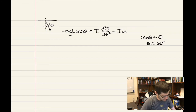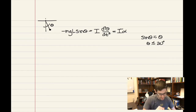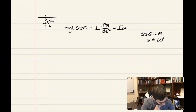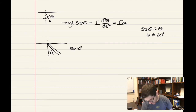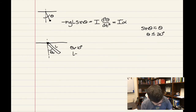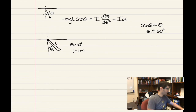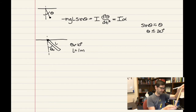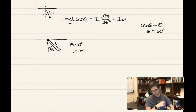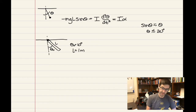Let's do a pendulum problem. Suppose I have a meter stick (length L = 1 meter) suspended from the ceiling, released with a small angle theta₀ = 10 degrees. This is not a point-mass pendulum — it's a physical rod rotating about a pivot point at its end. The question is: what is the period of this meter stick? Let's first show it undergoes simple harmonic motion, then calculate the period.